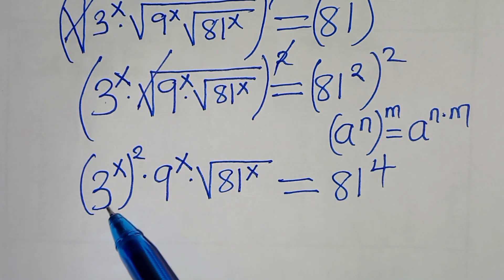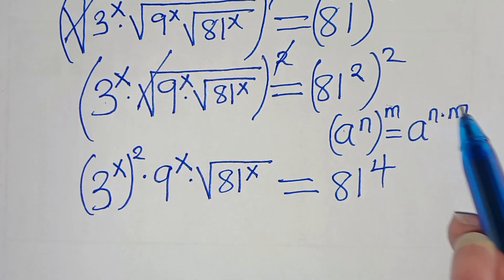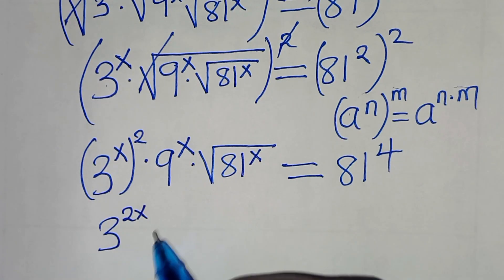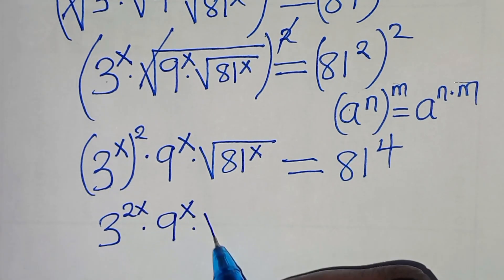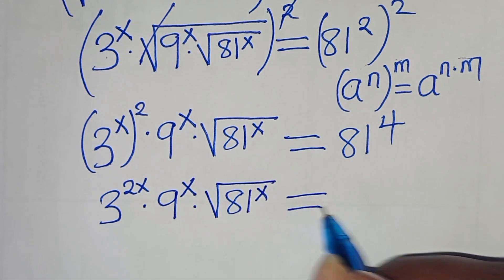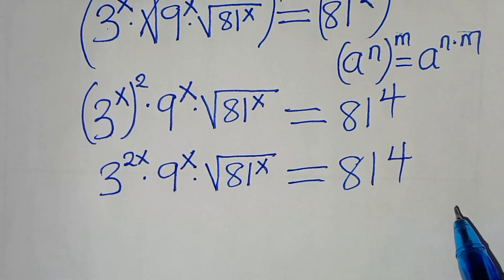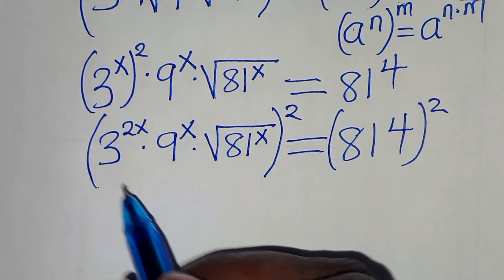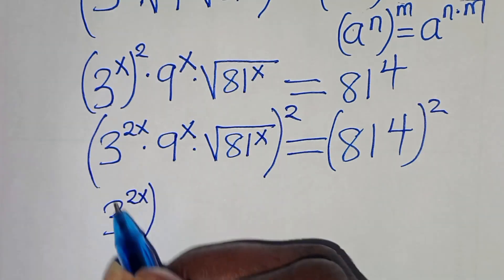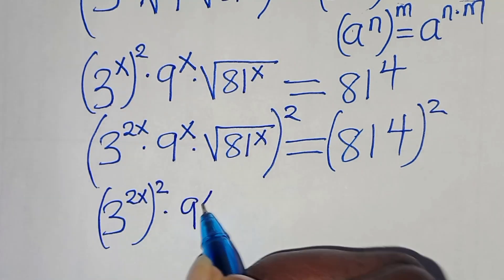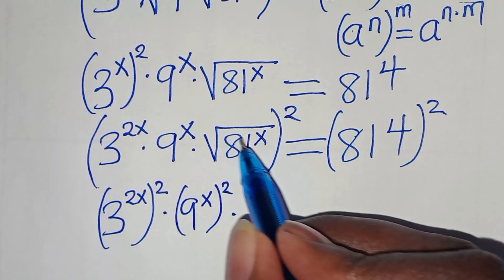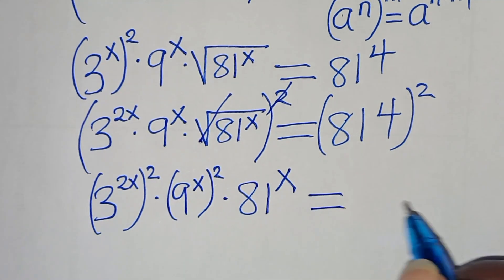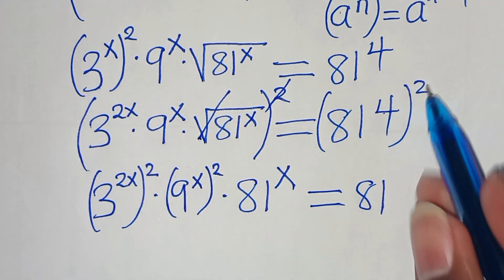The next step: 3 to the power of x to the power of 2 is in the form a to the power of m times n, which we transform into 3 to the power of 2x, multiplied by 9 to the power of x, multiplied by the square root of 81 to the power of x, equal to 81 to the power of 4. Squaring both sides again, we eliminate the third square root sign and get 81 to the power of 4 times 2, which equals 81 to the power of 8.